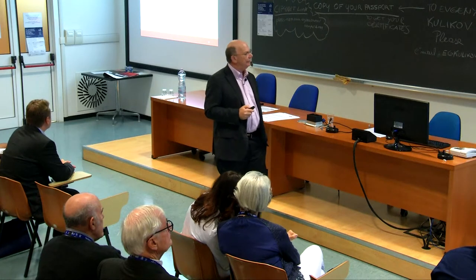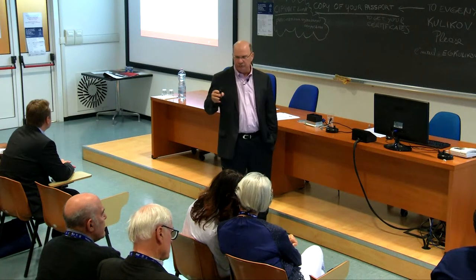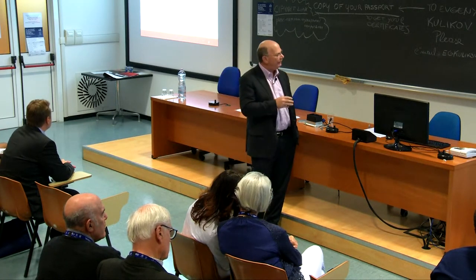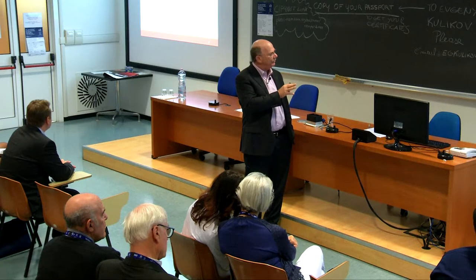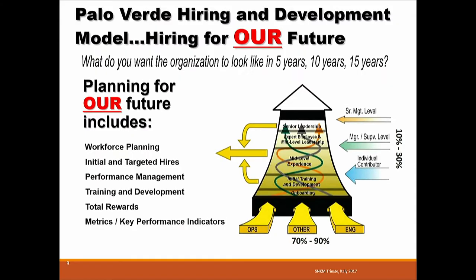What's really important in talent management is you've got to have a strategy or methodology to measure ability, desire, and commitment to a particular organization. HIPO — high-potential programs — require some sort of strategy to monitor how you develop it and track your results. A lot of utilities in the United States are starting to use people health committees to review and follow that sort of process.